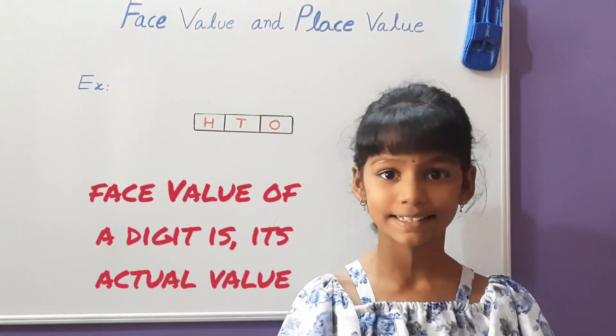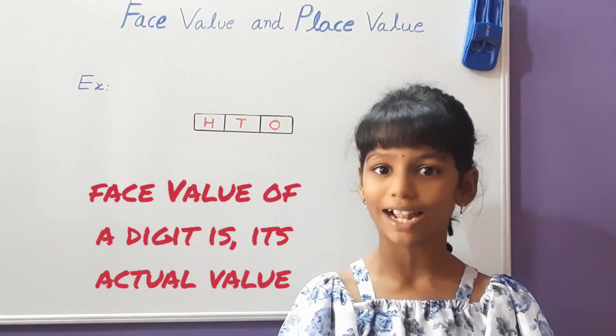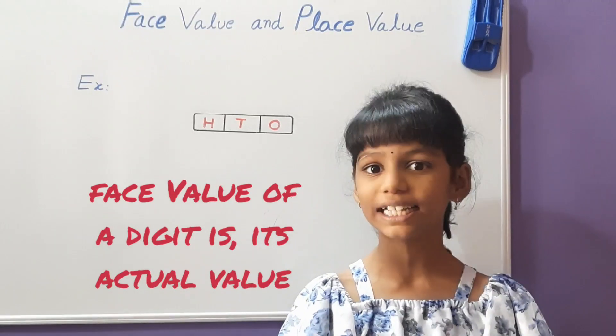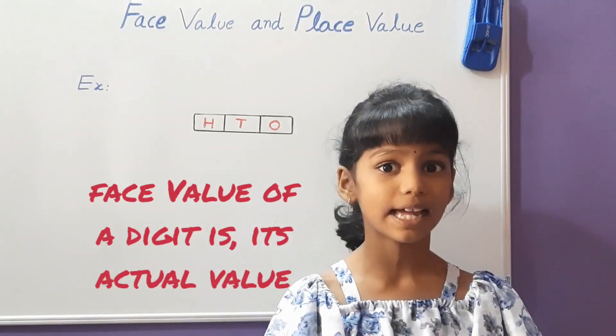The face value of a digit is its actual value. It never changes as the place changes. Let's see with an example.